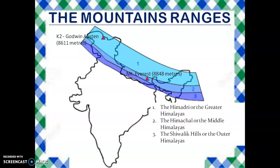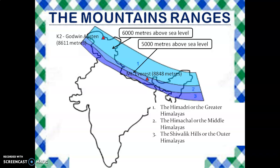The Himalayas consist of three mountain ranges which run parallel to each other, and they are divided on the basis of height. They are called Greater Himalayas, Middle Himalayas, and the Outer Himalayas or Lower Himalayas. These three shades of blue on the map represent those mountain ranges. The Greater Himalayas have an average height of around 6,000 meters above sea level. The Middle Himalayas have an average height of 5,000 meters above sea level. And the Shivalik Hills have a height of 1,250 meters above sea level.